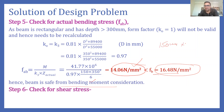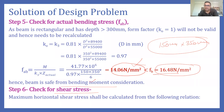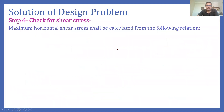Now we move to the next step: checking whether the beam dimension of 150 mm × 350 mm is also safe for horizontal shear stress. We need to find the actual shear stress and compare it with the permissible horizontal shear stress. The maximum horizontal shear stress is calculated using the shear formula, requiring values of V, Q, I, and b.